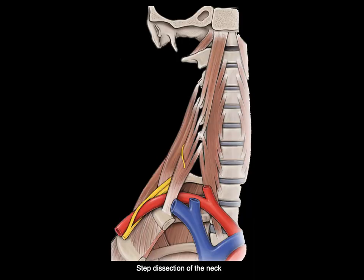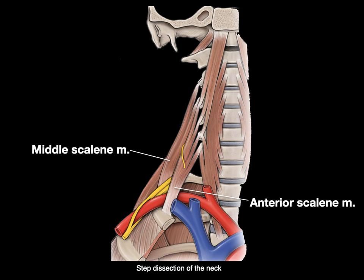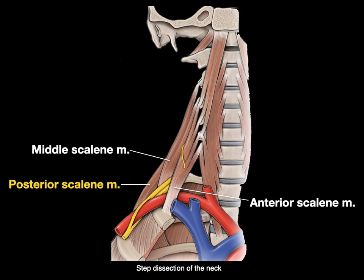Here's a step dissection of the neck on the right side, where that muscle is called the middle scalene, and this muscle is called the anterior scalene. And what do you think that one is called? You got it — the posterior scalene muscle.